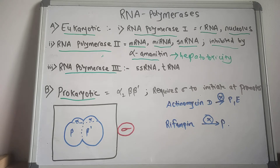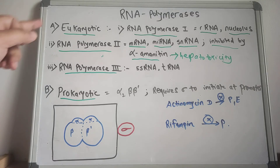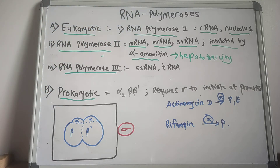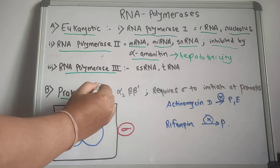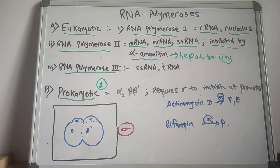In prokaryotes, there is only one type of RNA polymerase that makes all three kinds of RNA.